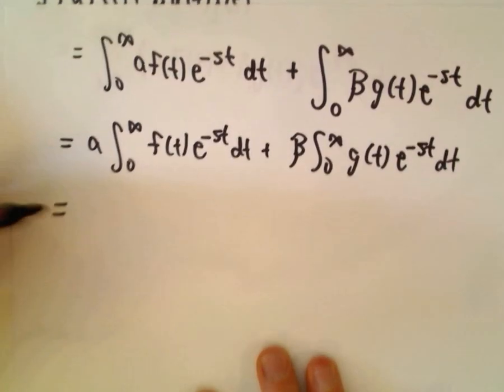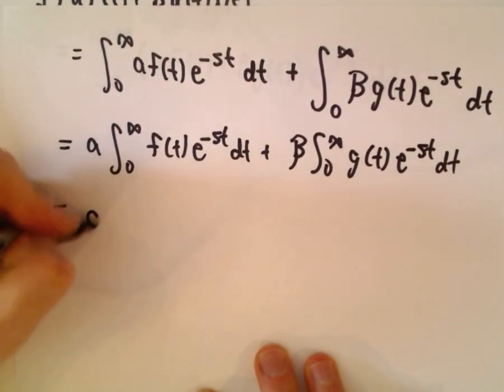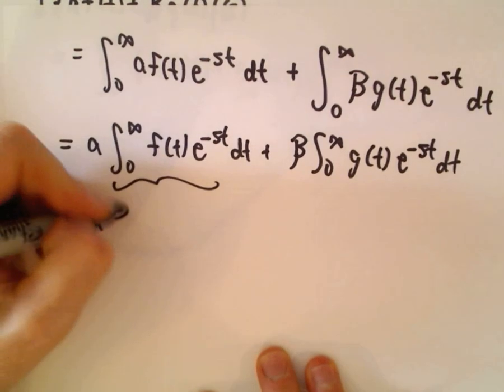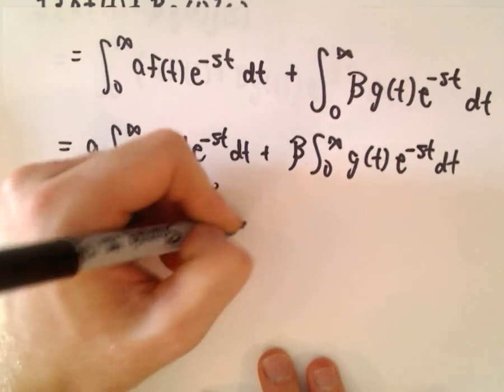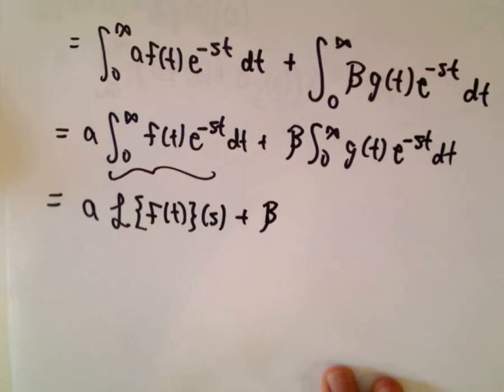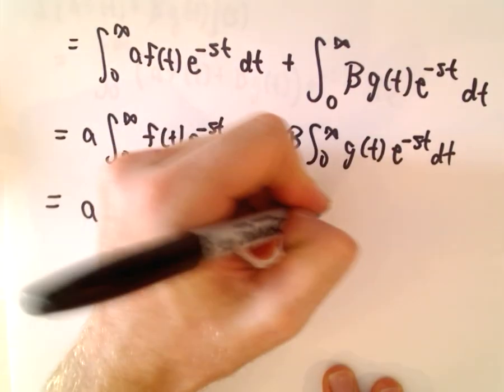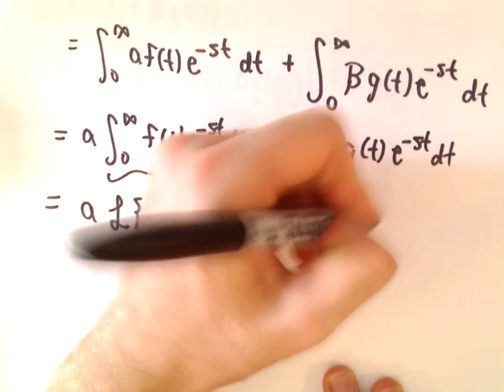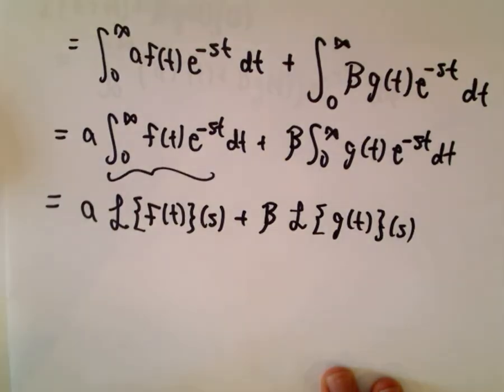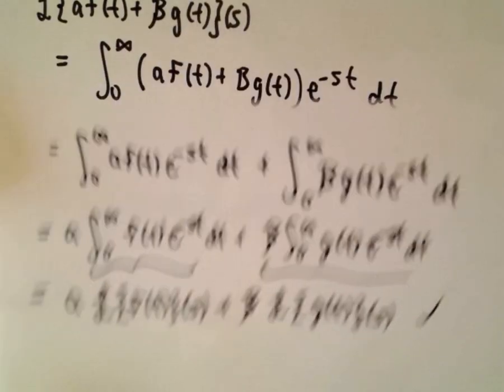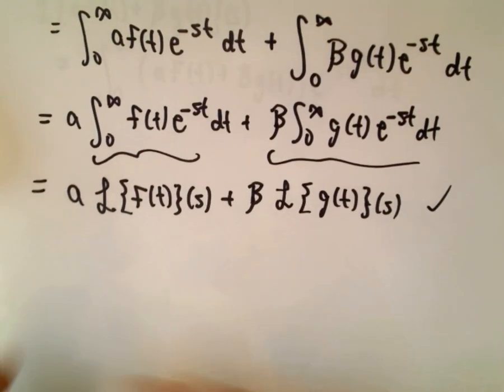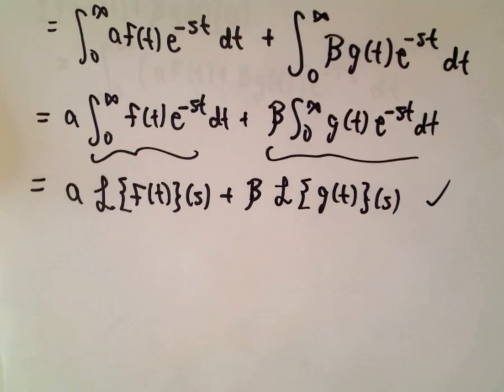And now we've got what we want. This is simply by definition the Laplace transform of f of t of s, and this is the Laplace transform of g of t of s. Okay, so no big deal, easy to prove, super easy, just plug it in and use the definitions and just recognize, hey, that's the Laplace transform.